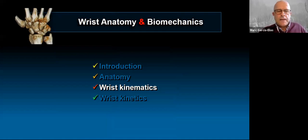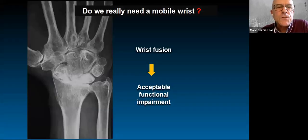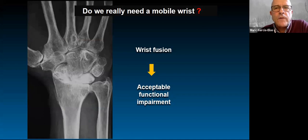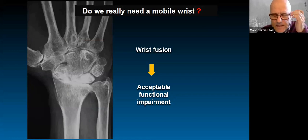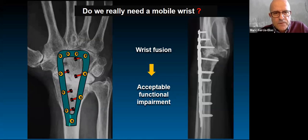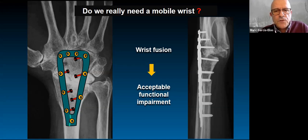Let's talk about kinematics — how motion is produced within the wrist. The first question: do we really need a mobile wrist? Many surgeons, particularly those treating heavy manual workers, believe wrist fusion has acceptable functional impairment. And probably they are right for that particular case. But remember, fusion is not a panacea — it is something we are losing. We cannot consider wrist fusion acceptable just because we have something to offer the patient.